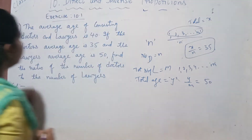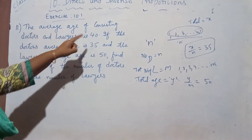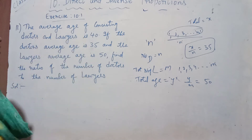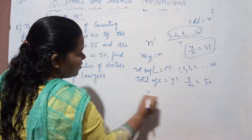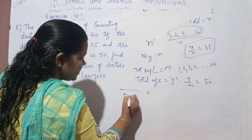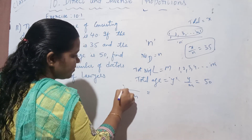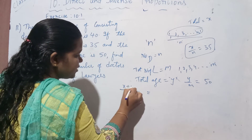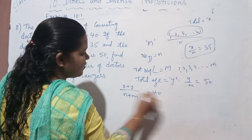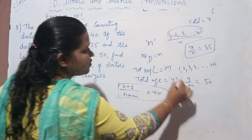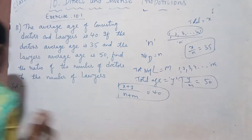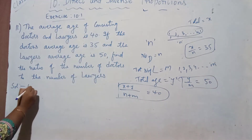Also, the average age of doctors and lawyers combined is 40. That means doctors and lawyers together is n plus m. The total age of both groups is x plus y, and x plus y divided by n plus m is given as 40. So here we are getting three conditions, and we will make use of these three conditions to solve the problem.